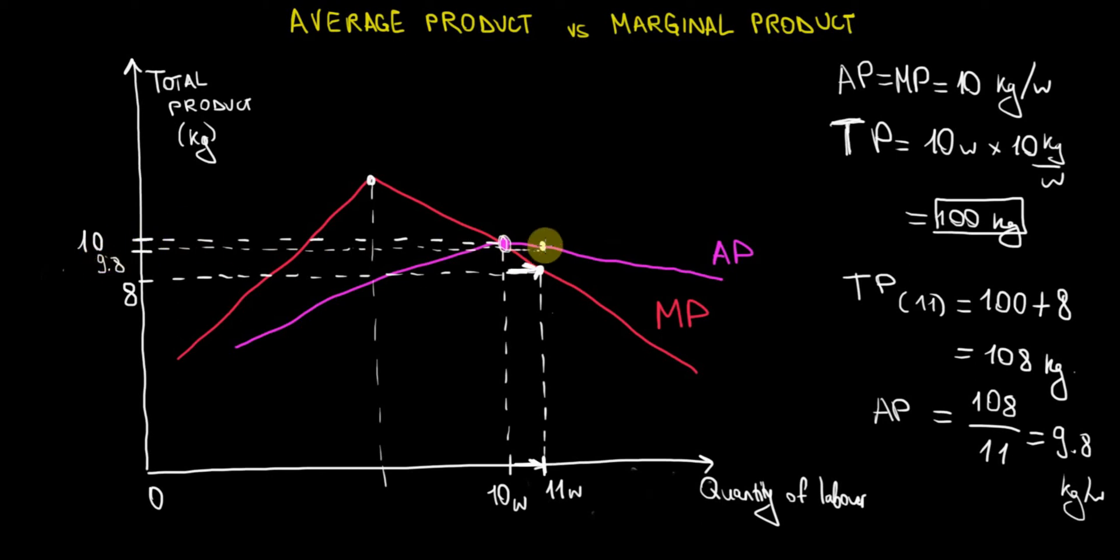So the average product starts falling because after the intersection point between MP and AP, the diminishing marginal product is dragging down the average product as well. I really hope that this example was able to prove that.